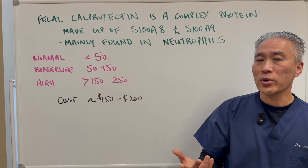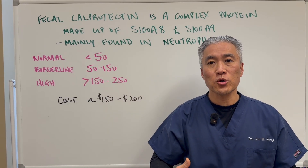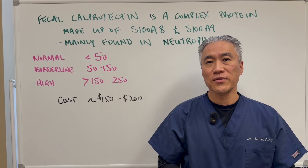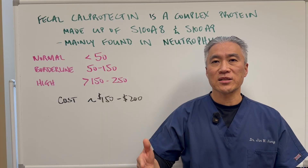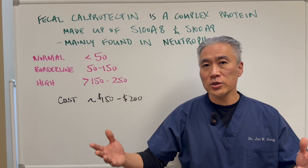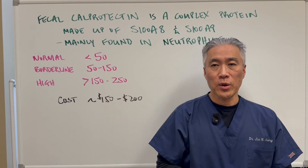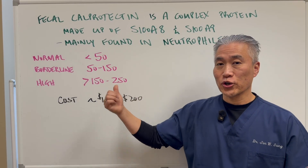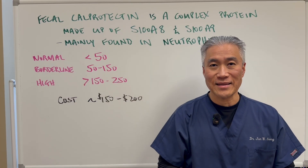Calprotectin is important because it's localized for more of the gut issues. Sometimes you do an inflammation marker of the blood like ESR or high-sensitivity C-reactive protein, and those come back normal or maybe slightly elevated. But when you do the calprotectin, it will really determine if you have GI inflammation that's active.